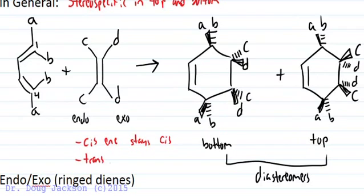And if we're trans, or E, whatever groups are trans to each other, opposite sides, that on the ene, so C and D are opposite sides on the alkene, the dienophile, they're also opposite sides on the final products. And so the stereochemistry is very important.